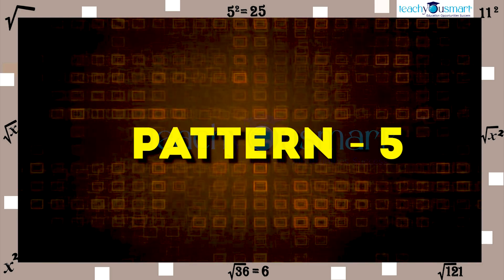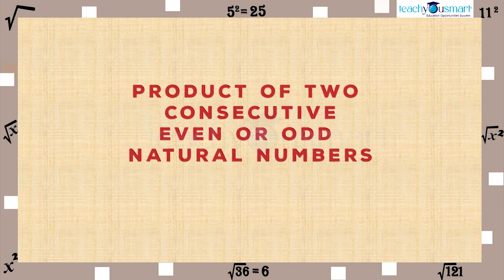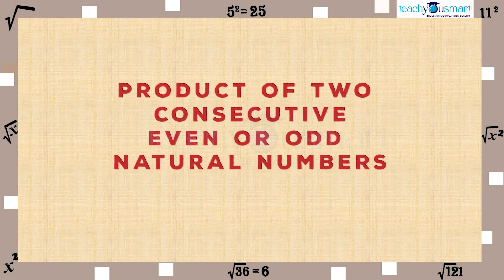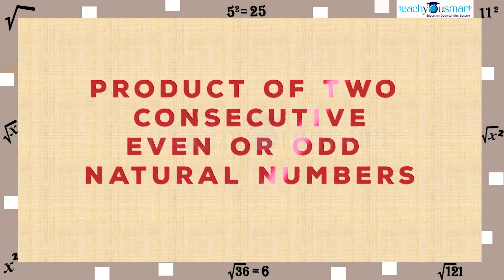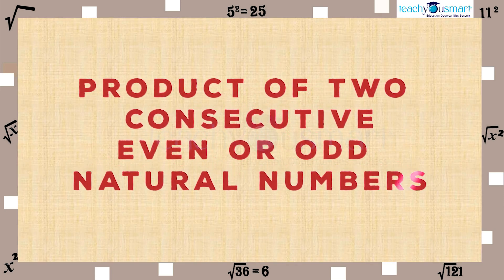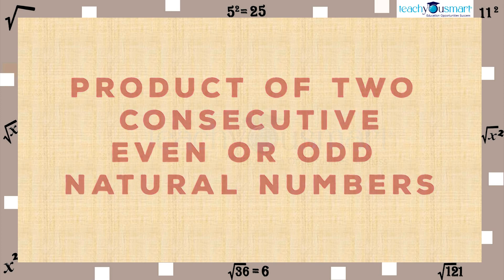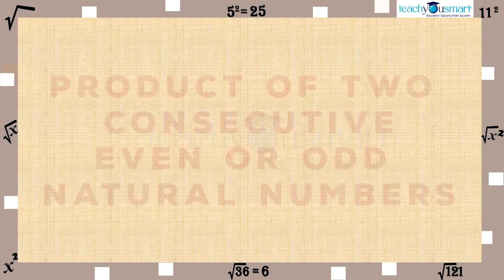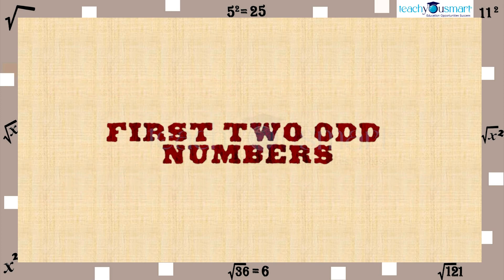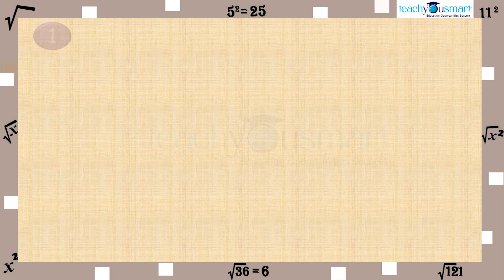Next, we move our attention to the product of consecutive even or odd natural numbers. Let's start with the first two odd numbers, that is, 1 and 3. We know 1 multiplied by 3 equals 3.